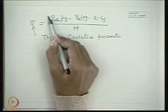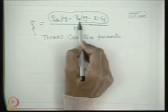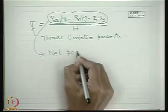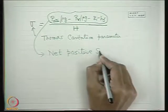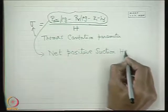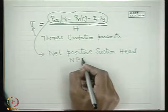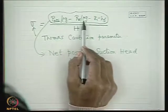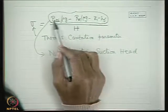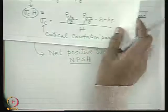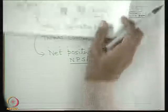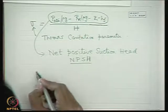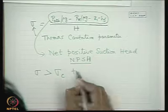The numerator of the Thomas cavitation parameter expression — [p_atm/(ρg) − p_v/(ρg) − z₁ − h_f] — is known as the Net Positive Suction Head (NPSH). The condition to avoid cavitation is that σ must be greater than σ_c, meaning the pressure at the impeller inlet must always remain higher than the vapor pressure.